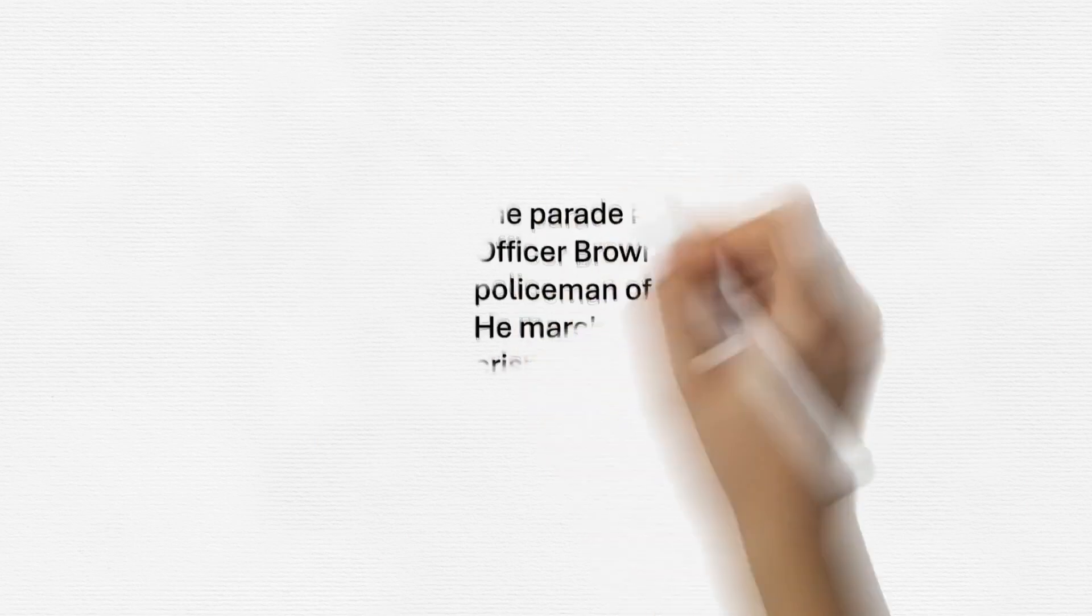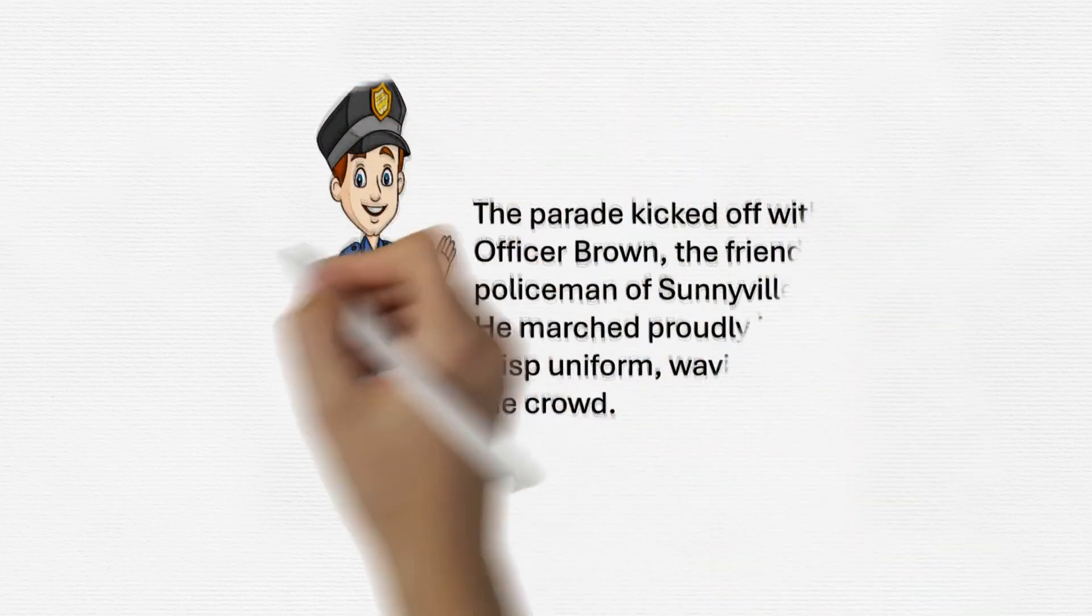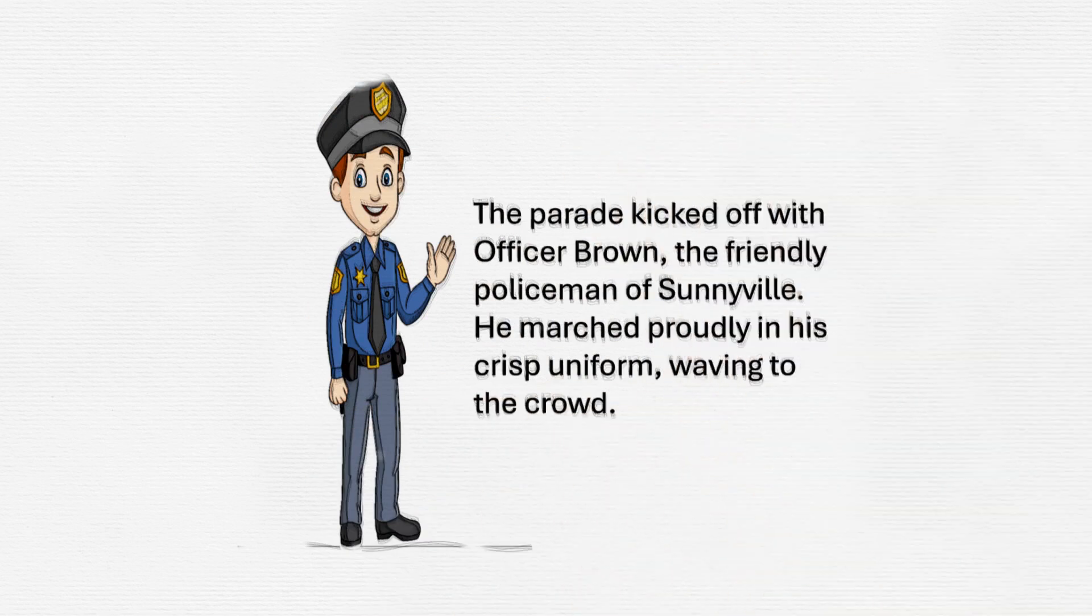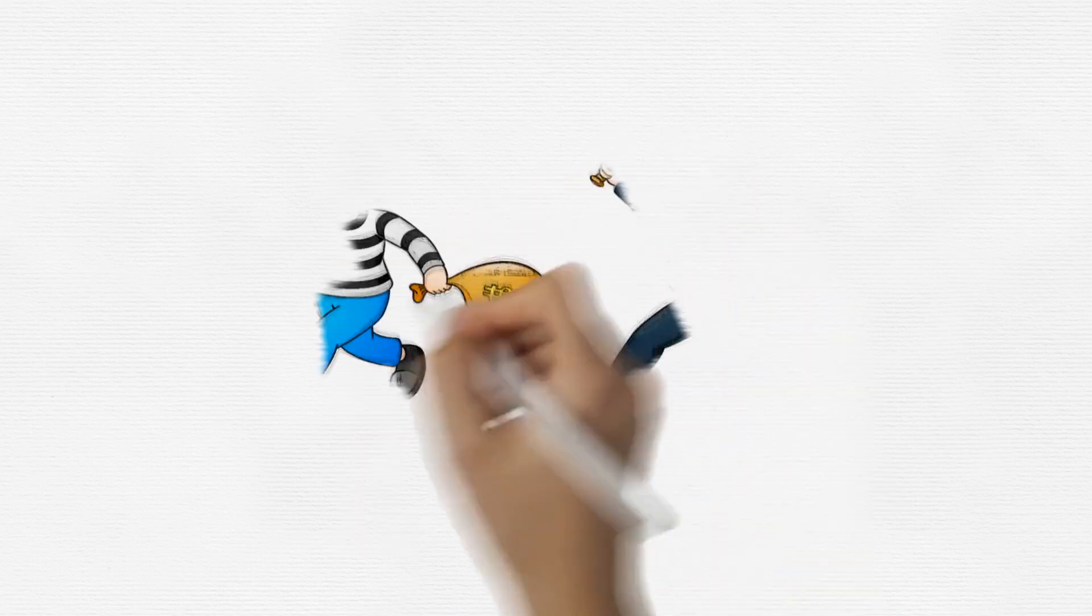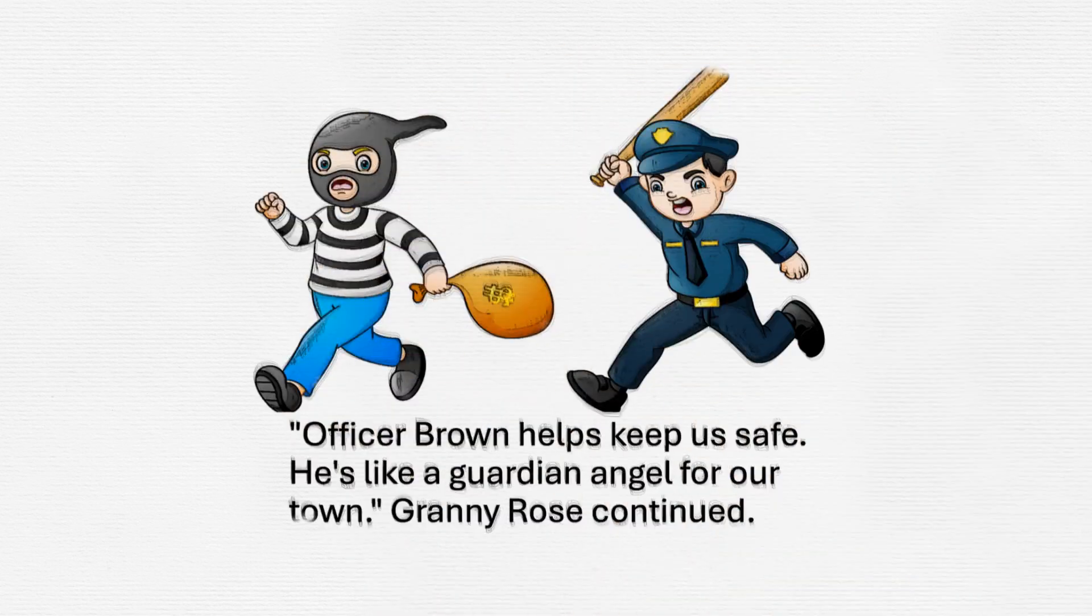The policeman's polished shoes. The parade kicked off with Officer Brown, the friendly policeman of Sunnyville. He marched proudly in his crisp uniform, waving to the crowd. 'Officer Brown helps keep us safe. He's like a guardian angel for our town,' Granny Rose continued.